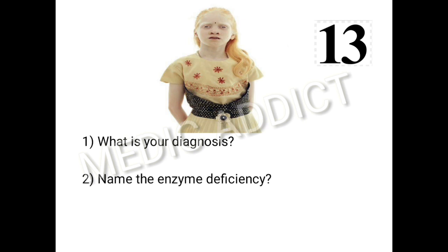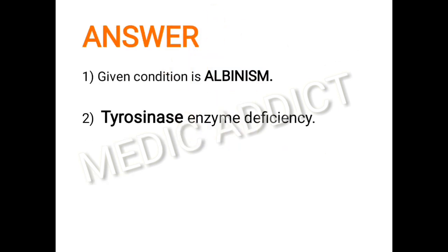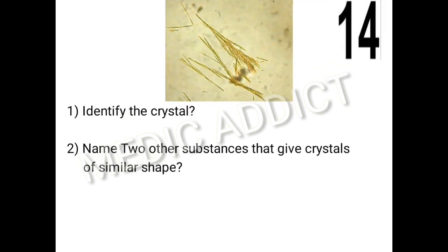The next spot represents a figure of a girl whose entire body is white in color. We have to identify this clinical condition and name the enzyme that is the cause of such a condition. The given condition is albinism and the enzyme deficiency associated with it is tyrosinase enzyme deficiency.